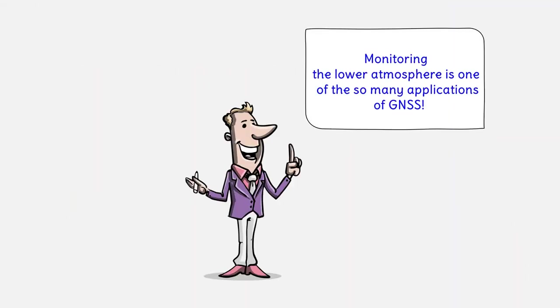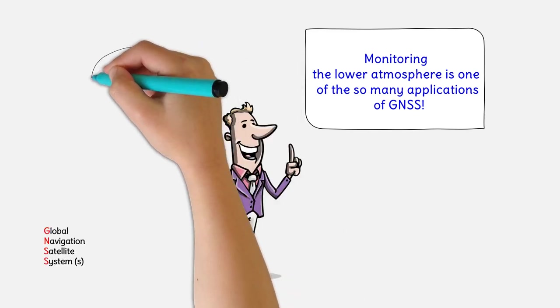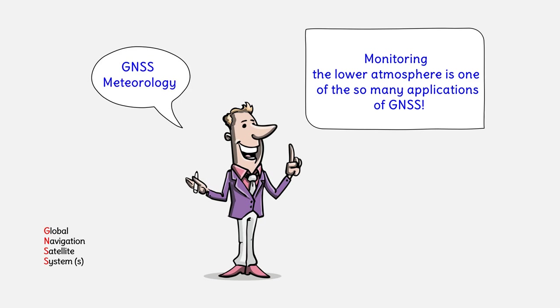Monitoring the lower atmosphere is one of the many applications of GNSS. It is known as ground-based GNSS meteorology, which is the topic of this video.